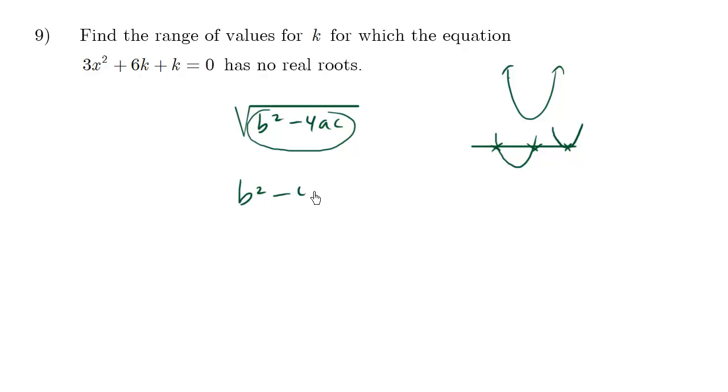So we want b² - 4ac to be less than zero. If it was equal to zero, there would be one root. If it was greater than zero, there would be two roots. However, here we want it to be less than zero because we want no real roots.